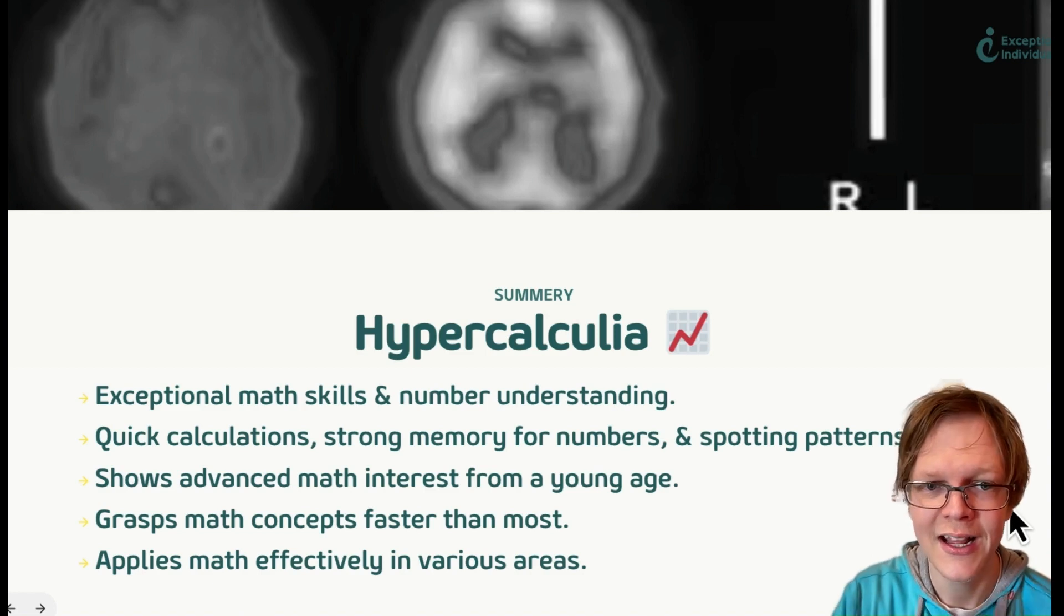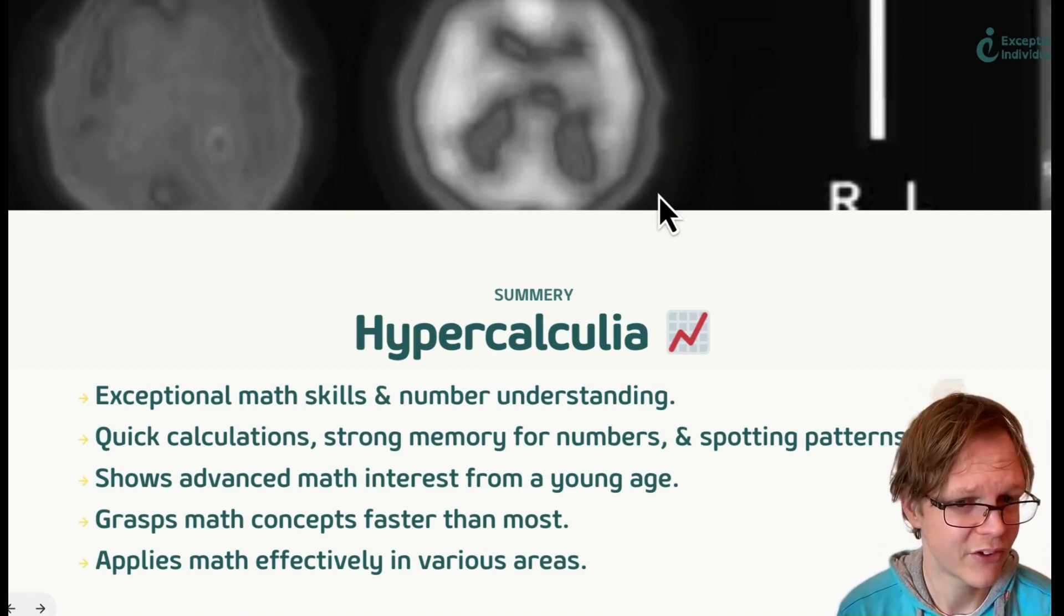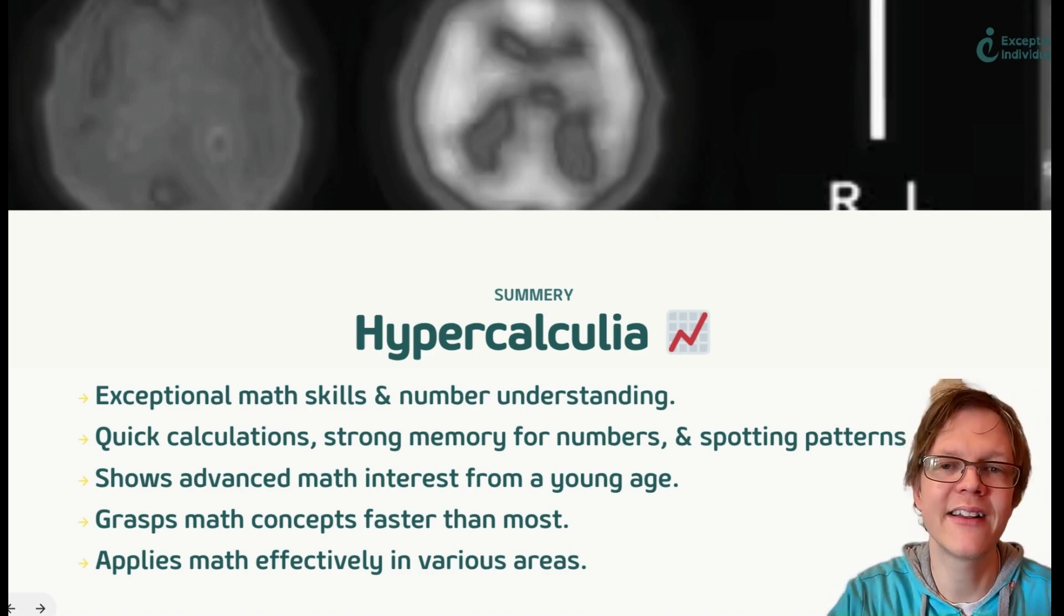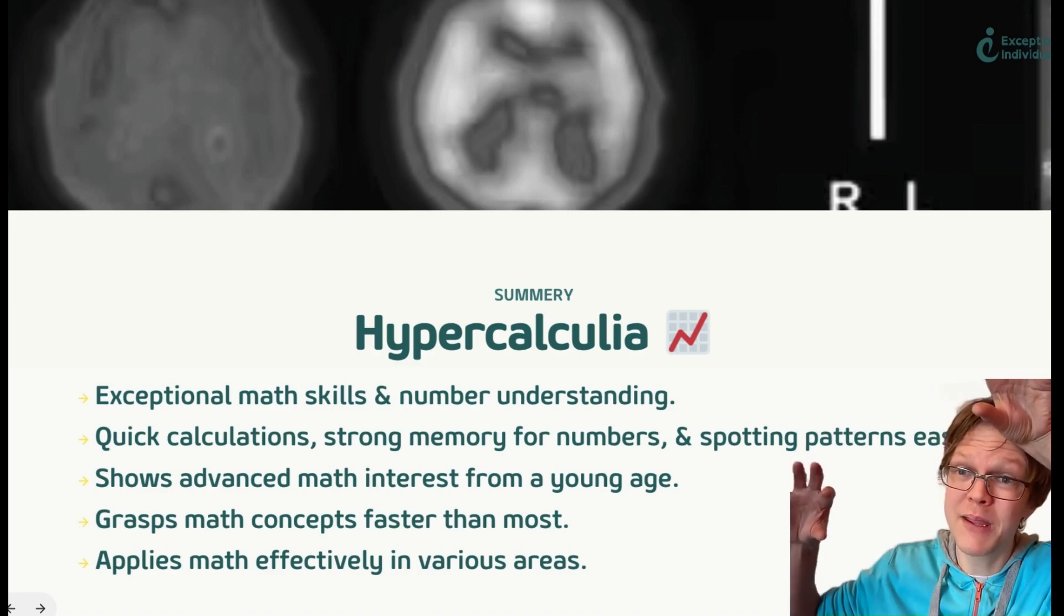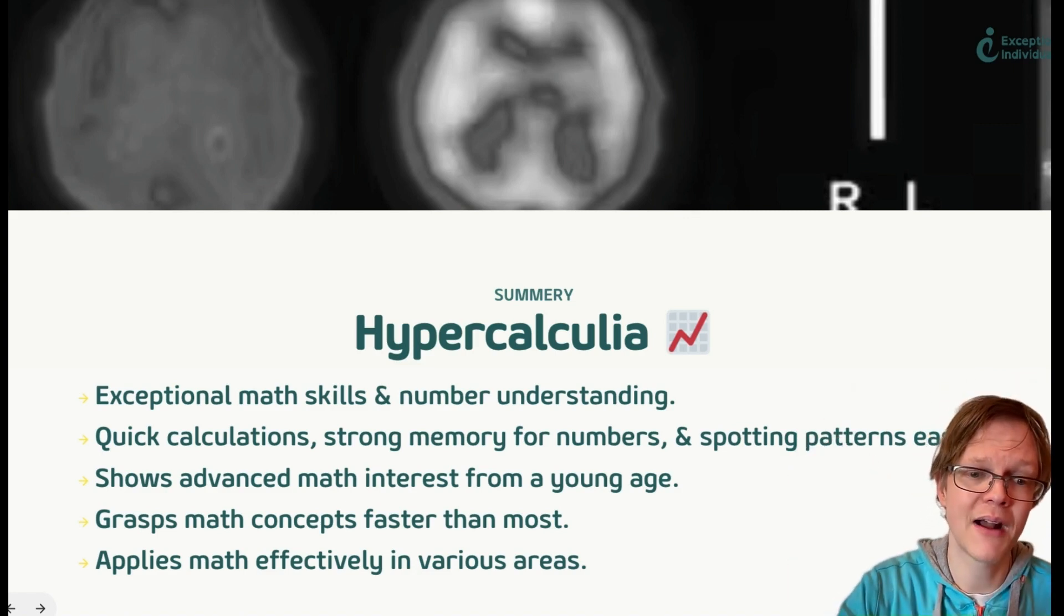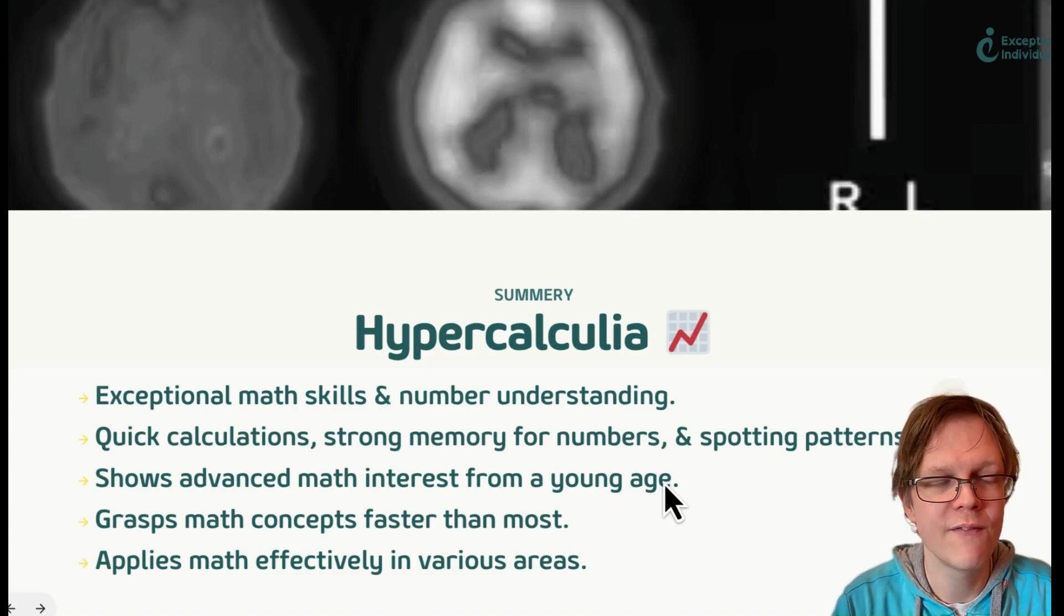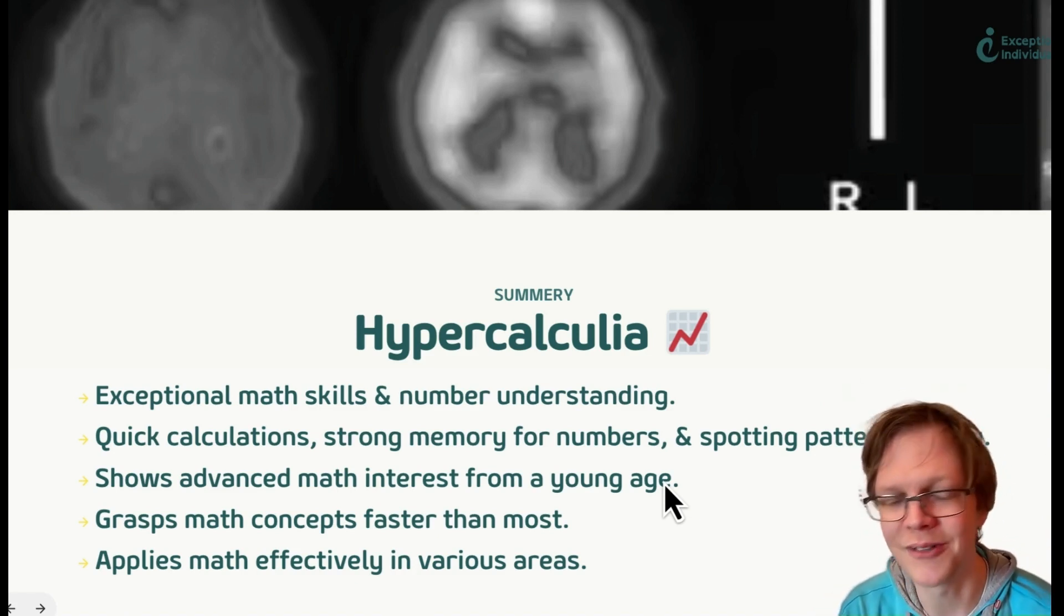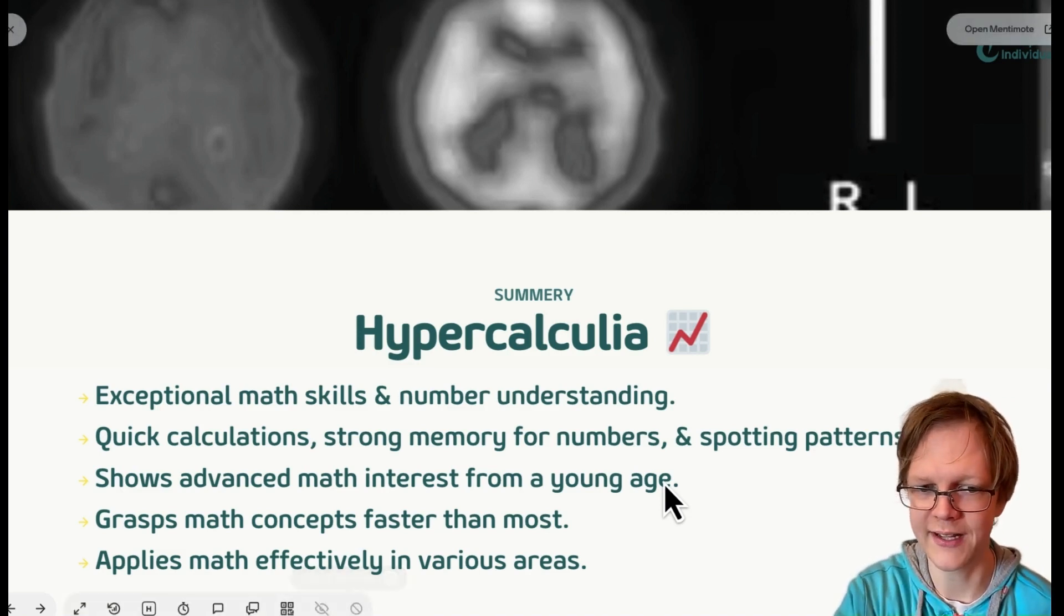When we are looking at hypercalculia, it's a term which more research is needed. This is a brain without it. This is a brain with it. You can see that the tissue is very noticeably different. Exceptional math skills and number understanding, and exceptional here, not just good. Quick calculation, strong memory, shows advanced maths interest from a young age. With these hyper conditions, typically they peter out in later life, but not always.